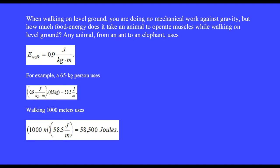When walking on level ground you are doing no mechanical work against gravity, but how much food energy does it take an animal to operate muscles while walking on level ground? Any animal, from an ant to an elephant, uses 0.9 joules per kilogram for each meter they travel. A 65 kilogram person uses 0.9 J/(kg·m) times 65 kg equals 58.5 joules per meter. Walking 1,000 meters uses 58,500 joules. We'll come back to this when we discuss food and calories.